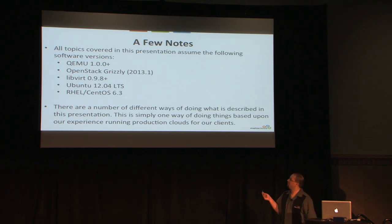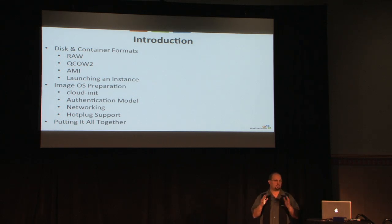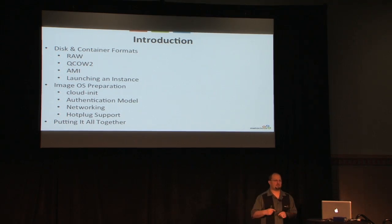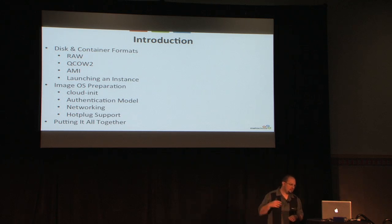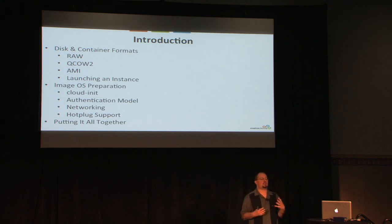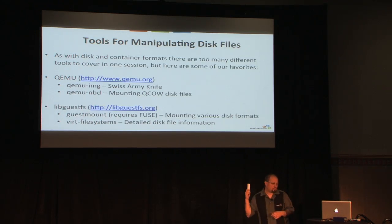The original version of this talk had about 80 slides, but I cut it down to 20. This is the way we now recommend for all of our clients, based on several years of working with OpenStack and KVM. I'll cover disk and container formats, focusing on raw and QCOW2, then AMI, then walk through what happens when you launch an instance in Nova, then OS preparation inside the image, and finally put it all together.